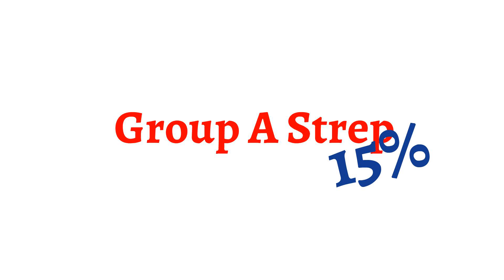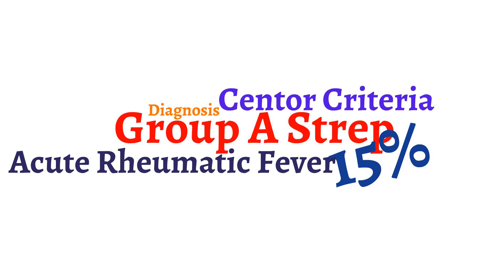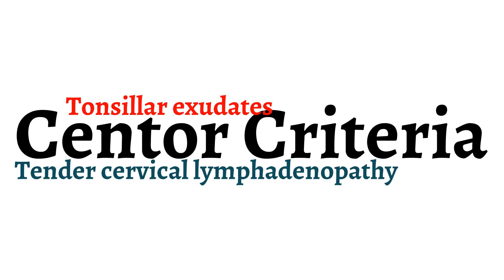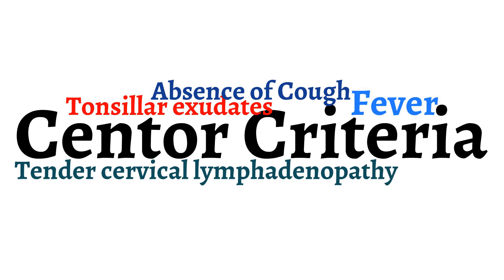To help us identify patients with group A strep, we look for a set of signs and symptoms that together are called the Centor criteria. The Centor criteria consist of whether the following are present: tonsillar exudates, tender anterior cervical adenopathy, fever, and absence of cough.